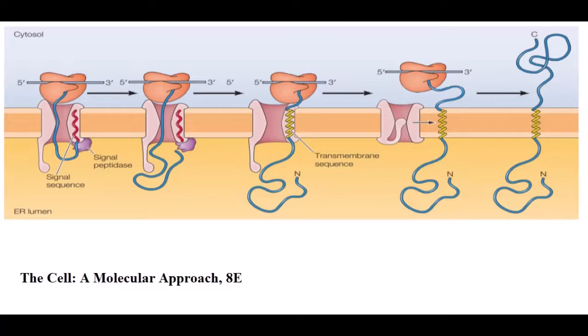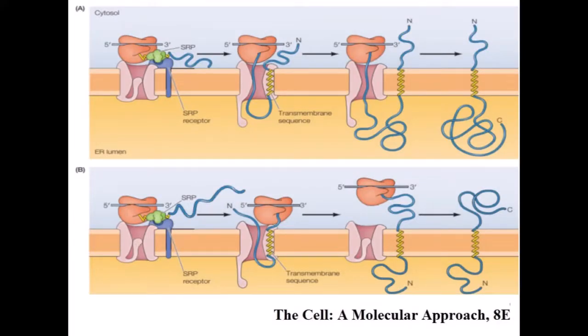The next insertion process is insertion of membrane proteins via an internal transmembrane sequence. In the first case, the transmembrane sequence directs insertion of the polypeptide such that its N-terminal is exposed on the cytosolic side. The transmembrane sequence then exits the translocon to anchor the protein in the lipid bilayer, and the remainder of the polypeptide chain is translocated into the ER as translation proceeds.